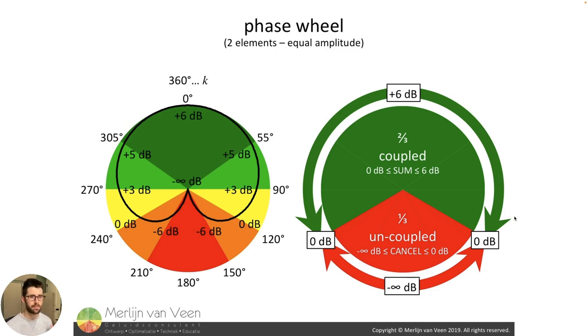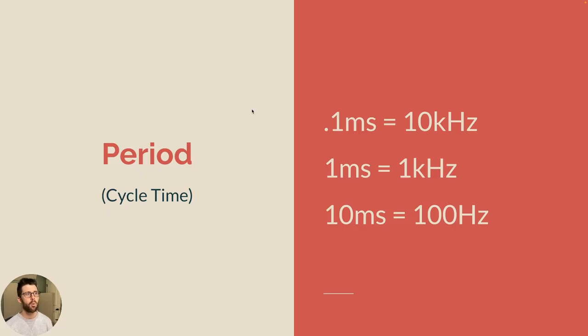This is described here in the phase wheel, a brilliant graphic from Merlin Van Veen. At the top, something is zero degrees offset or 360 degrees or 720, they're all going to come back and sum together perfectly. We're going to get a doubling or 6 dB of addition. As we move around the phase wheel, we're going to start to get less and less addition. We meet a stalemate at 240 degrees. As we move farther down towards our danger zone of 180, they're going to completely cancel out because they're basically a positive one and a negative one working against each other.